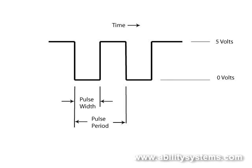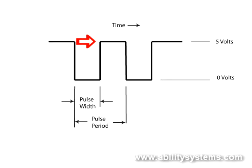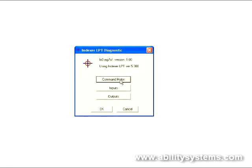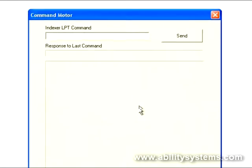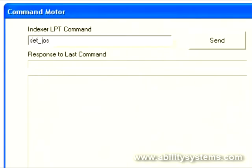The electrical term pulse describes a change in voltage from one level to another level and back again. In this case, pin 2 on the printer port is being used to generate negative 5 volt pulses, which means that the voltage on pin 2 will normally be at 5 volts, transition to 0 volts for the duration of the pulse, then transition back to 5 volts again. An easy way to visualize this is to generate very slow pulses from Indexer LPT and observe the output from pin 2 using a voltmeter.